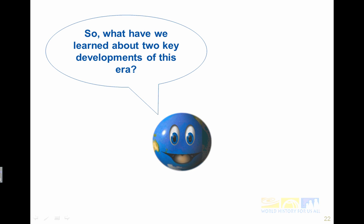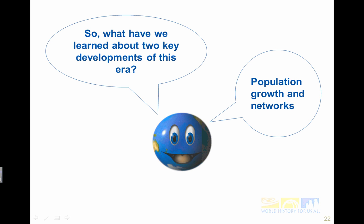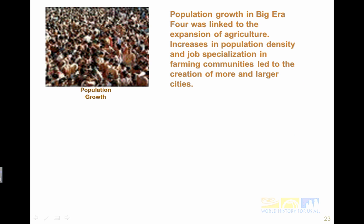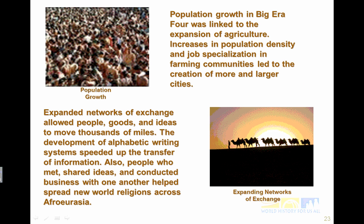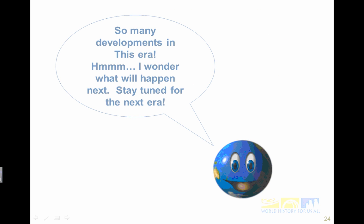To summarize the two key developments of this era — population growth and networks: population growth was linked to the expansion of agriculture, and increases in population density and job specialization led to creation of more and larger cities. Expanded networks of exchange allowed people, goods, and ideas to move thousands of miles. The development of the alphabet speeded up the transfer of information, and people who met, shared ideas, and conducted business helped spread new world religions across Afro-Eurasia. A lot has changed in this era — stay tuned to see what happens next. Thanks for watching.